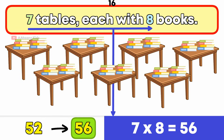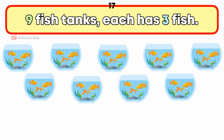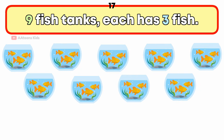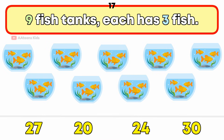9 fish tanks each containing 3 fish. How many fish are there in total? 27 fish.